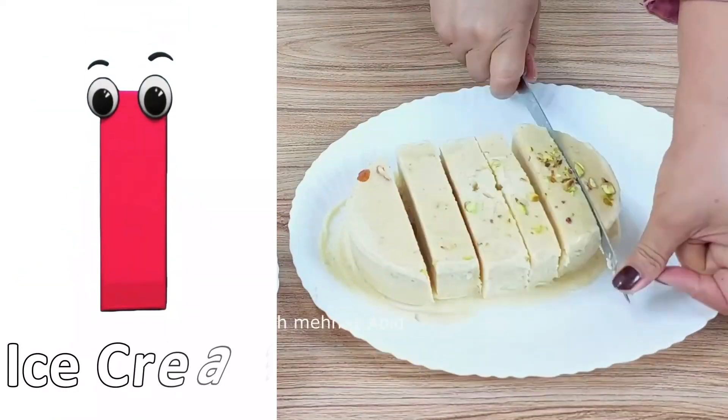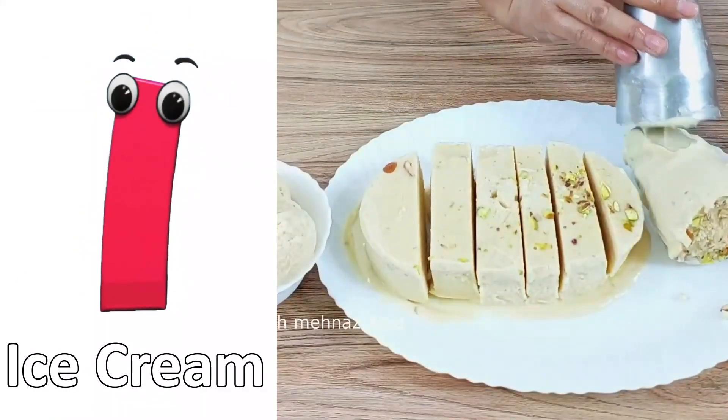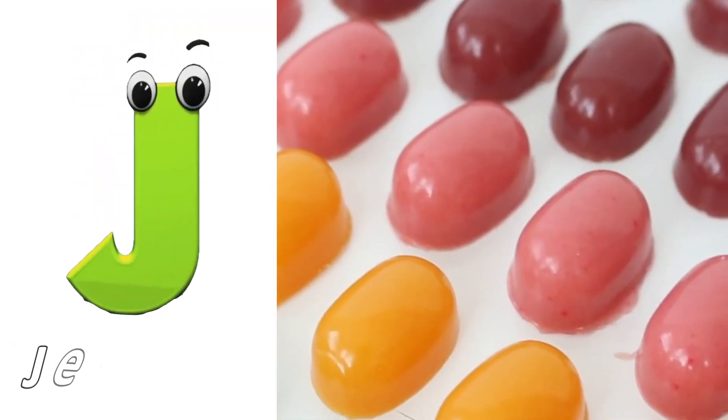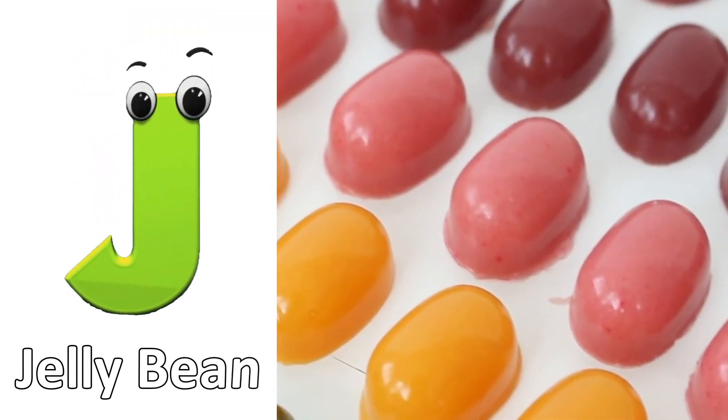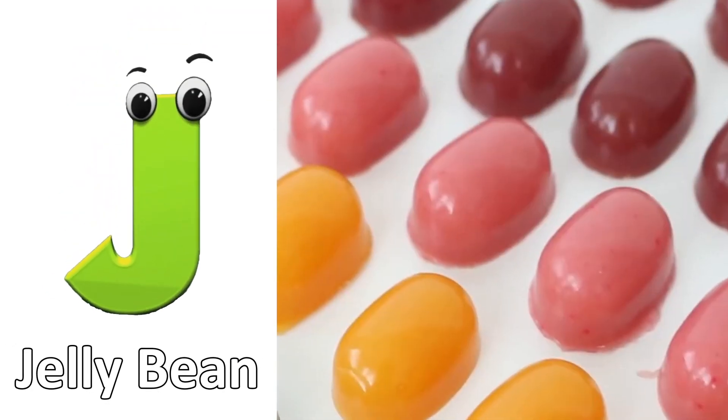I is for Ice Cream, ice cream. J is for Jelly Bean, Jelly Bean.